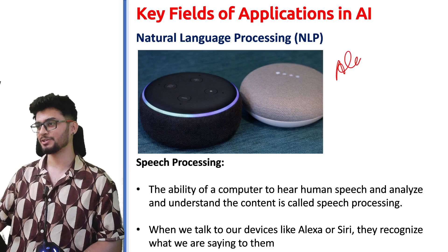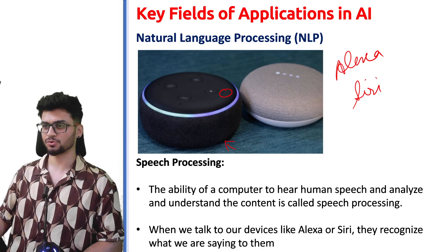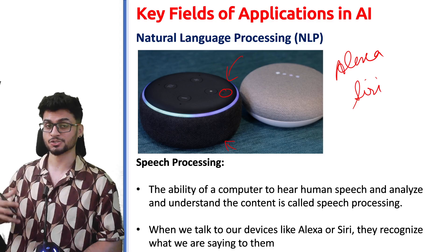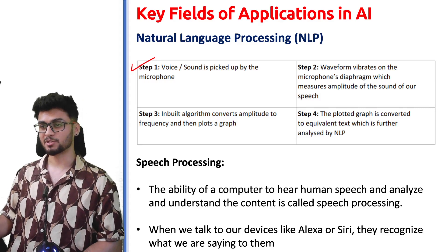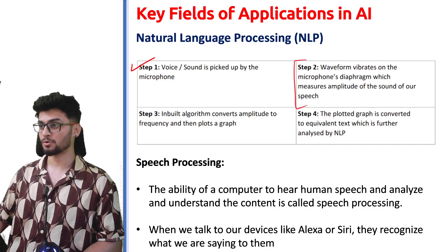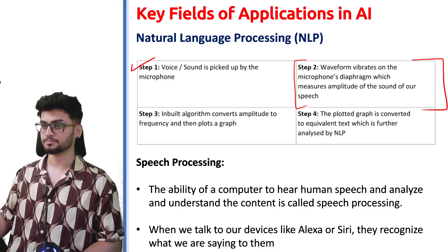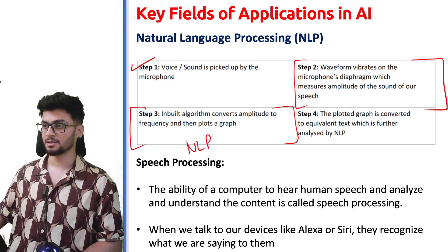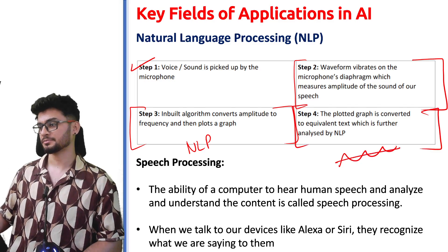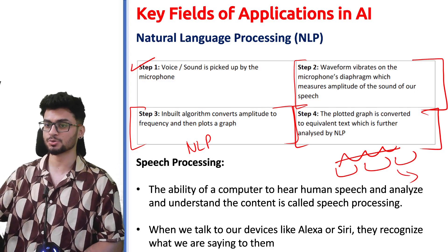Since we're talking about NLP, let's talk about Alexa, Siri, and Google Assistant. These speakers have a microphone inside which captures human speech, processes it, and gives a quick output. For example, if you say 'Hey Siri, please set my alarm for 7am,' the microphone converts your sound into electrical signals. Then an NLP algorithm converts that frequency into words, and your sound waves are broken down word by word and processed to give an output. This is known as speech processing.